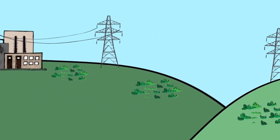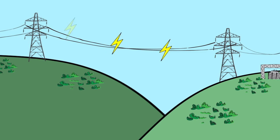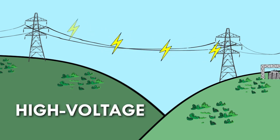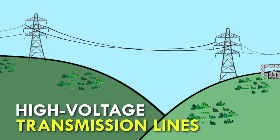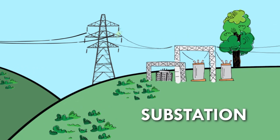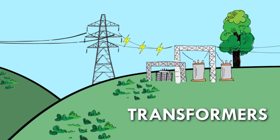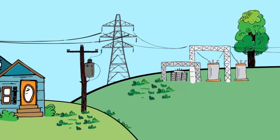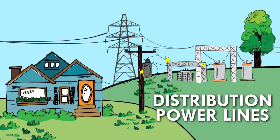The electricity is then sent over vast distances by way of high-voltage transmission lines. The electricity arrives at your co-op substation where transformers lower the voltage, then send it on to your home using distribution power lines.